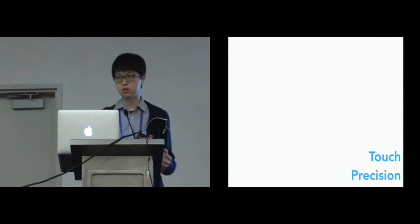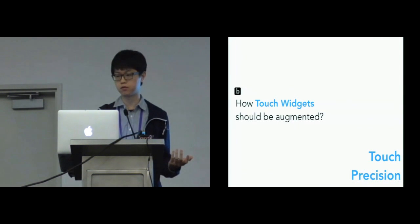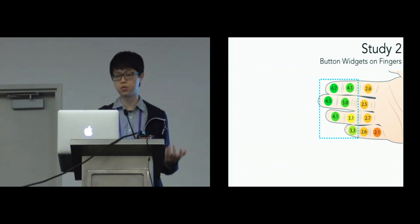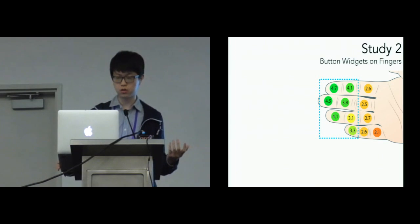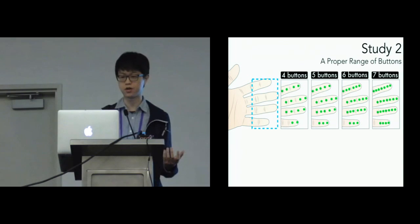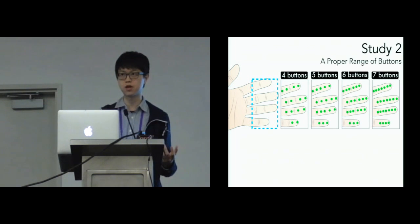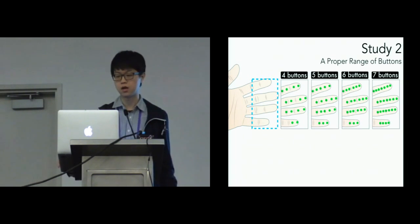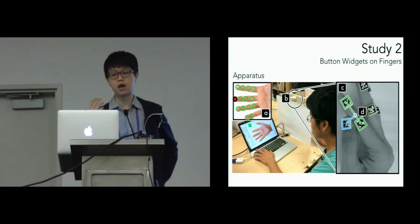Now let's move to the second human factor: touch precision. This directly links to the second question — how should touch widgets be augmented? For example, how should button widgets be augmented on the fingers? We used a brute-force approach, proposing four-button to seven-button layouts on fingers, assigning random targets and asking participants to locate them on the fingers in an eyes-free manner.